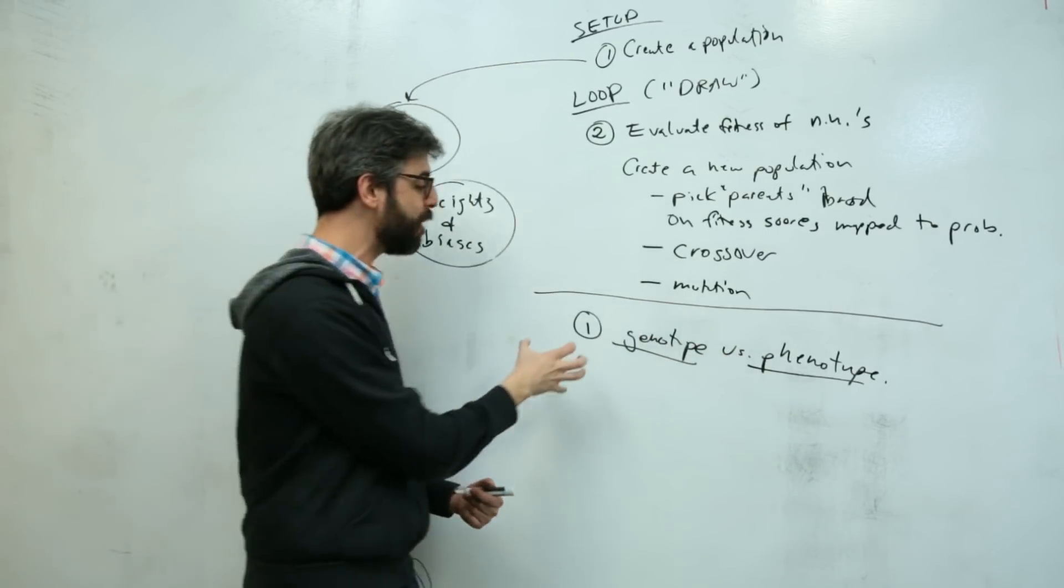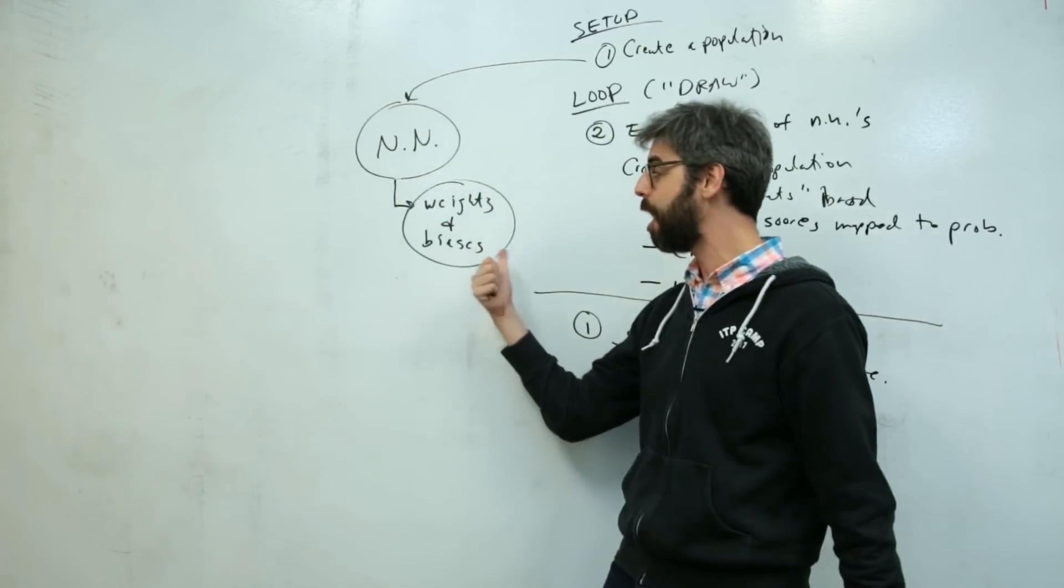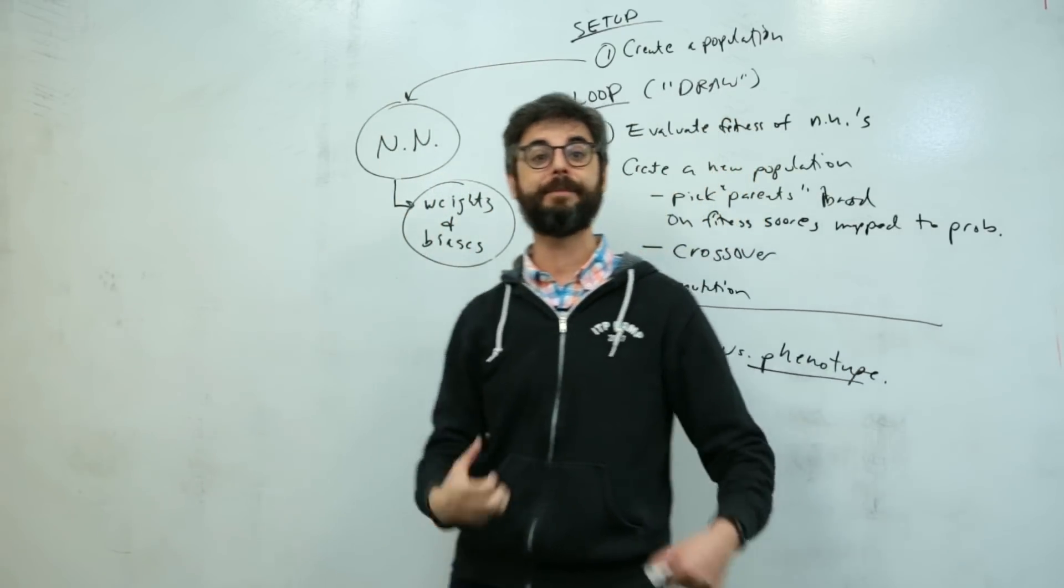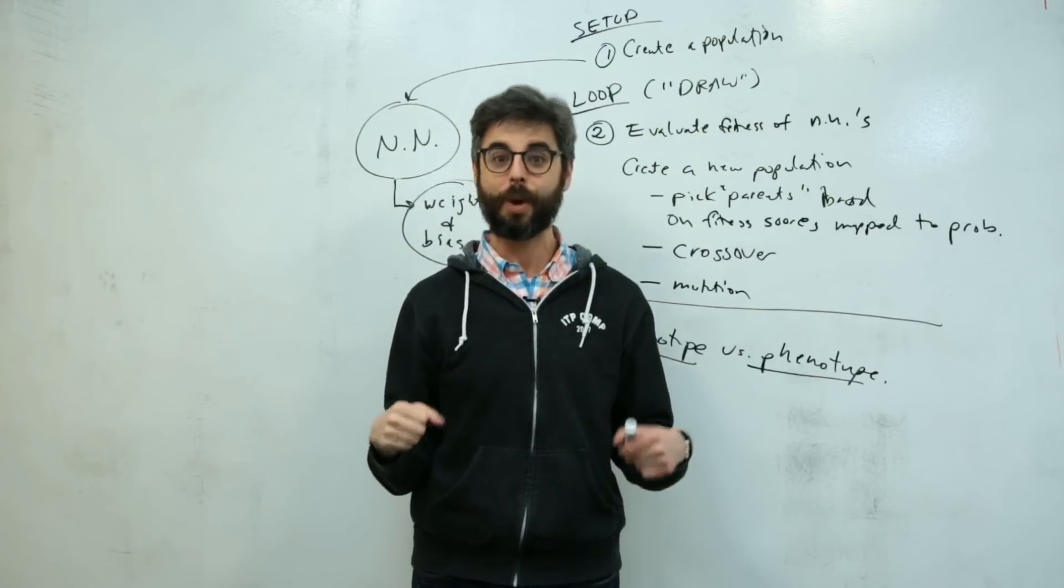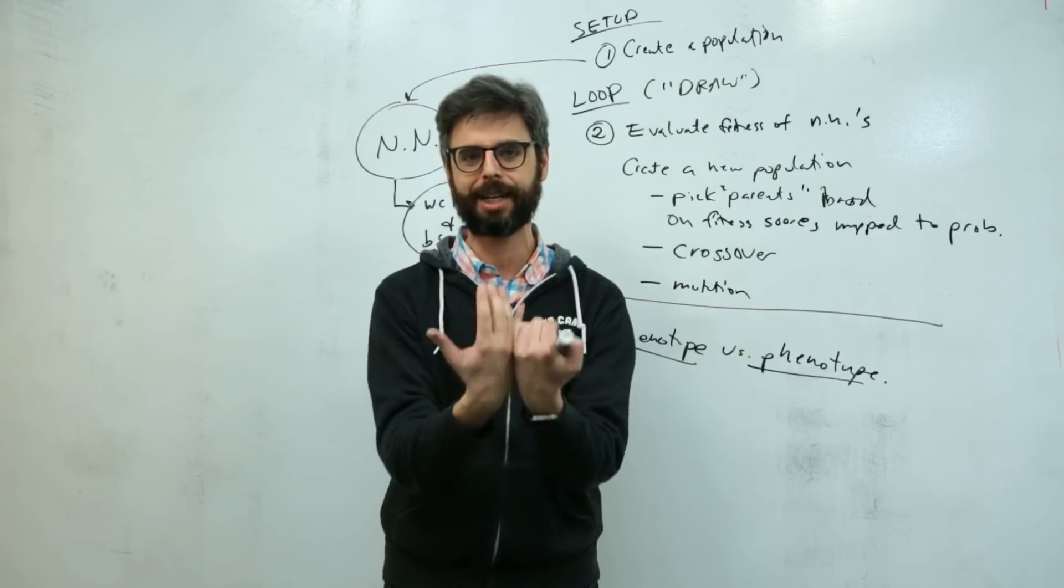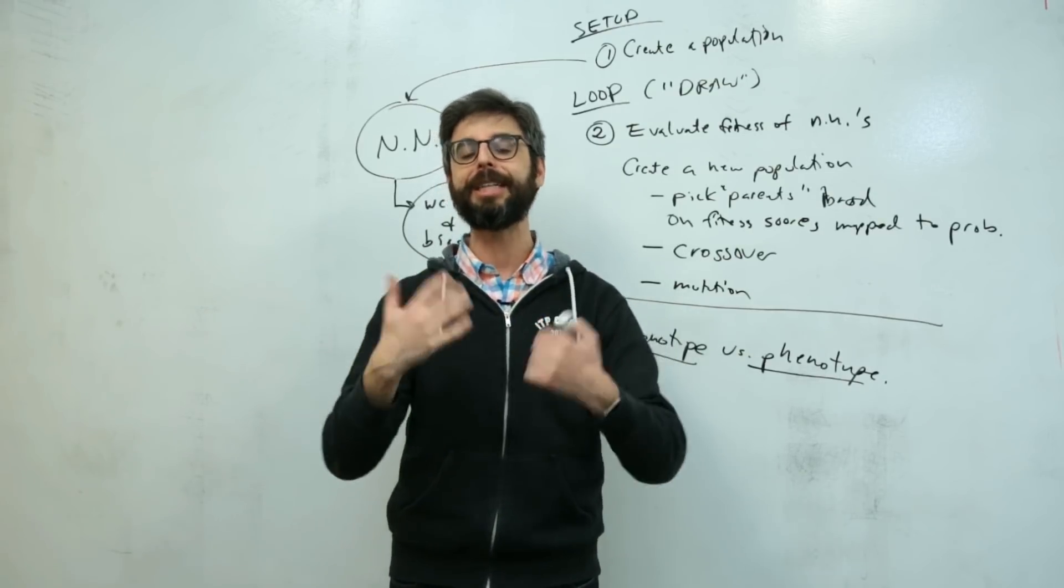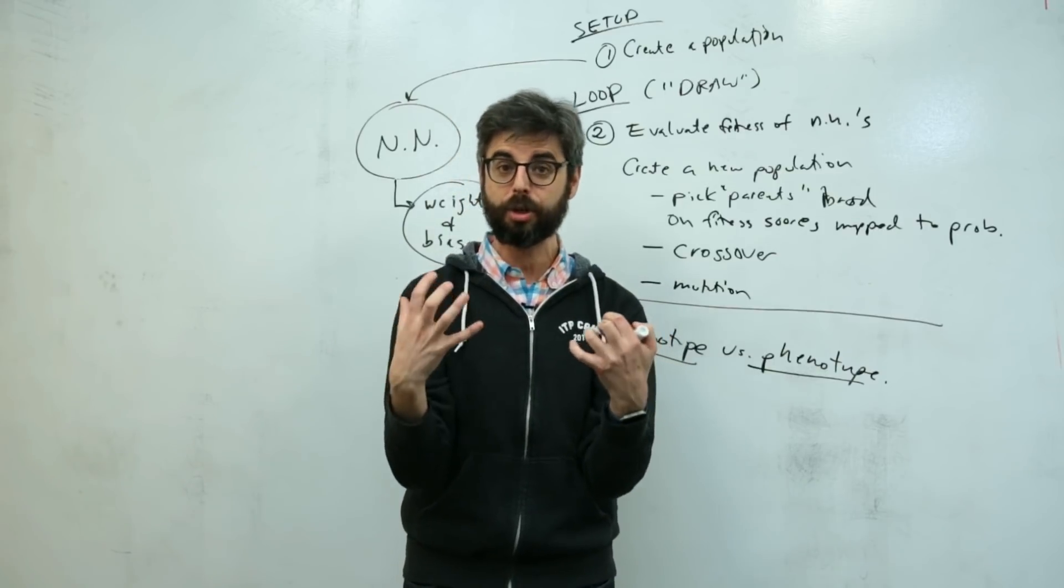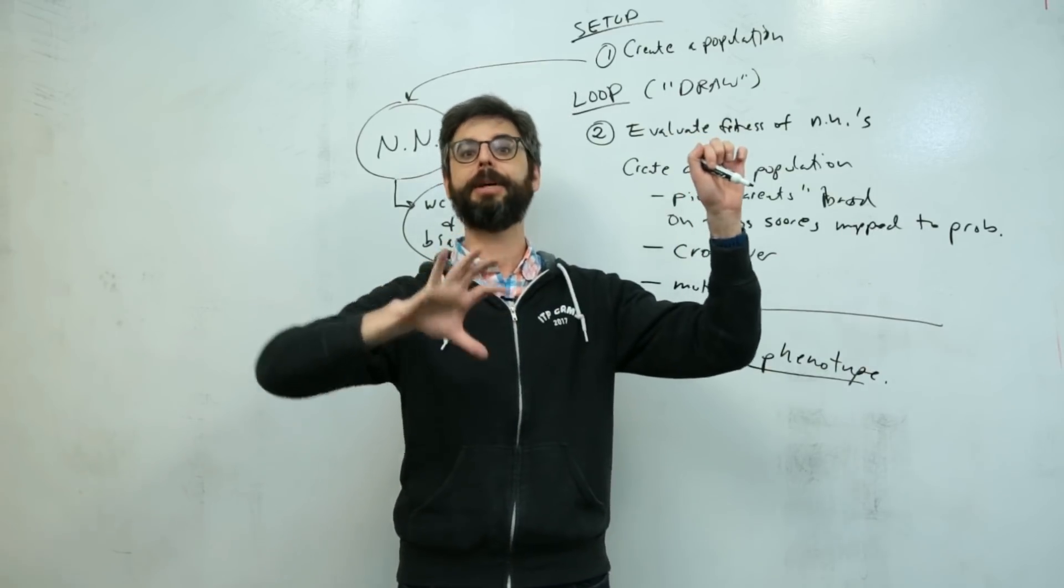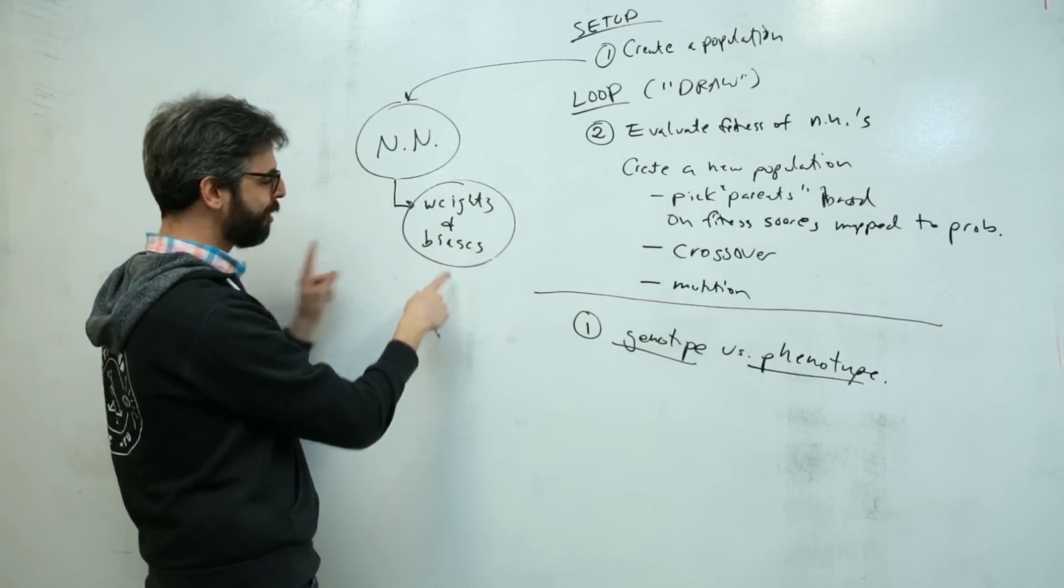The phenotype is the expression. It's really what am I using the neural network for? For example, in the game Flappy Bird, the expression might be the decision whether to jump or not jump. That's how it's going to be used in a given scenario. In a classification example, it could be classifying an image and turning it into a string.